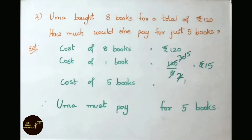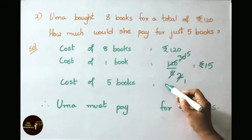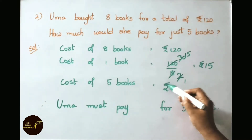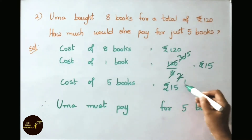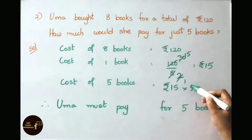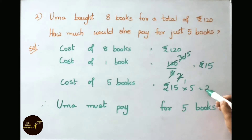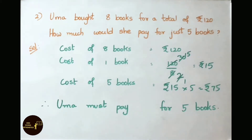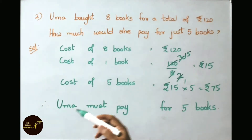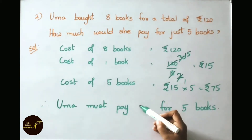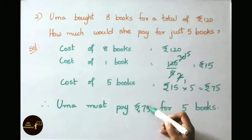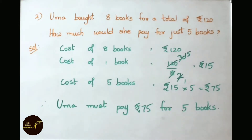Let us find the cost of 5 books: 15 rupees into 5, that equals 75 rupees. Therefore, Uma must pay 75 rupees for 5 books.